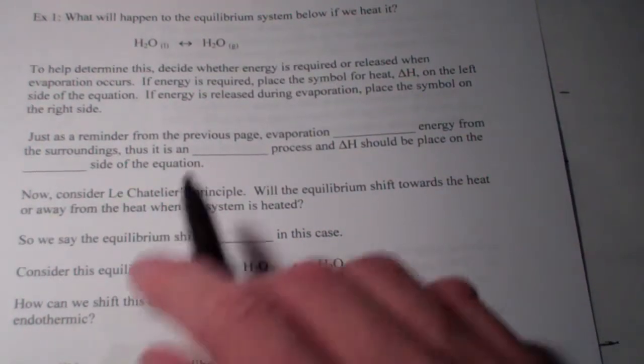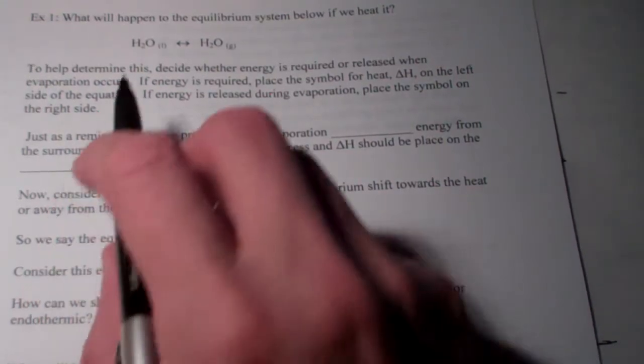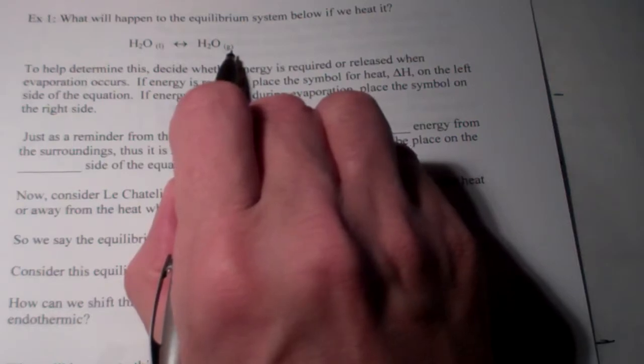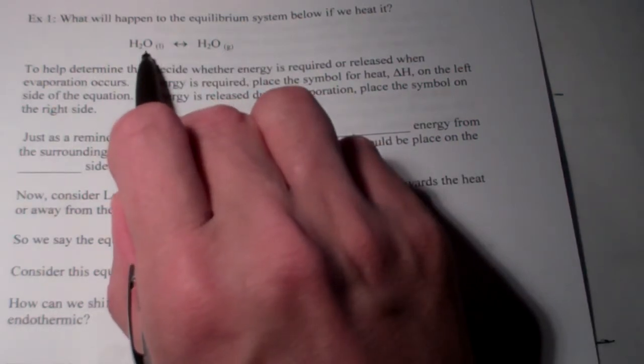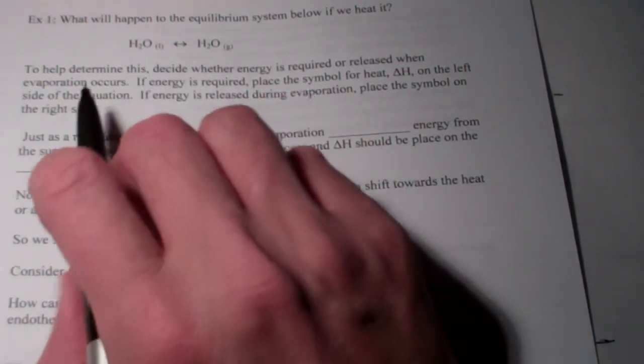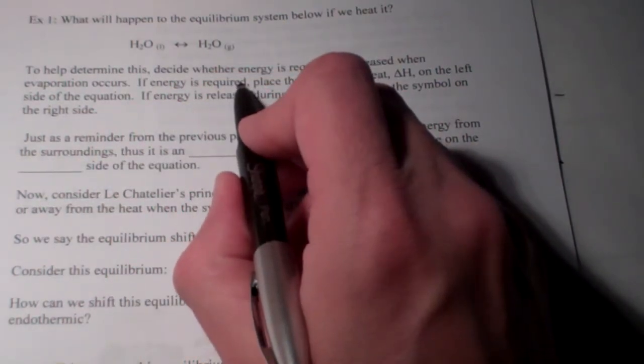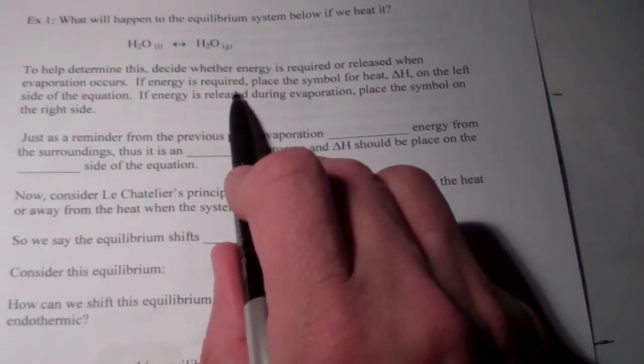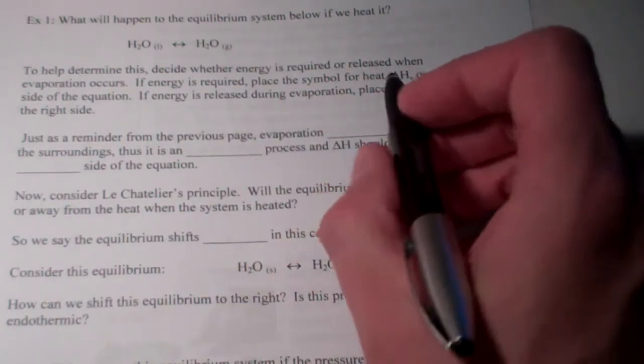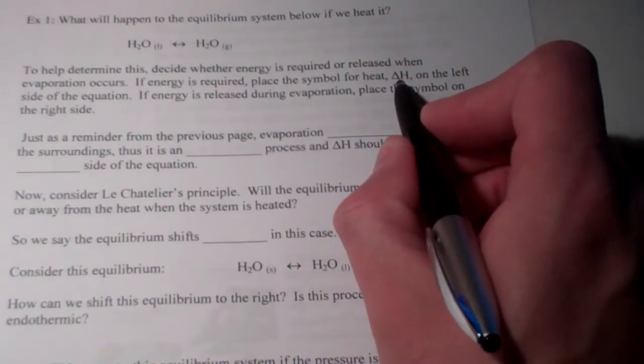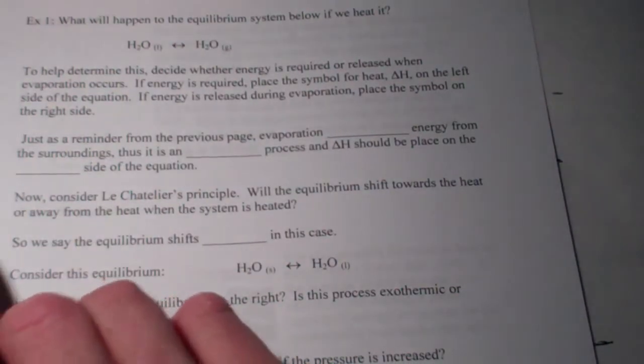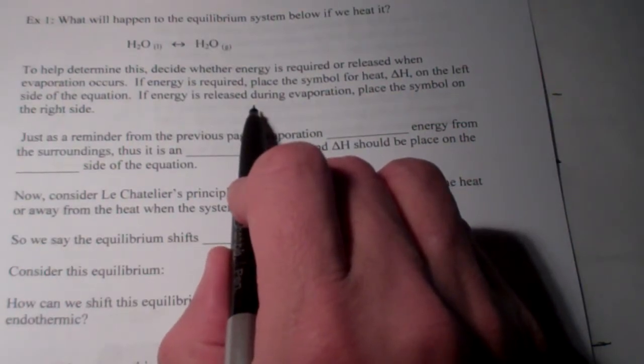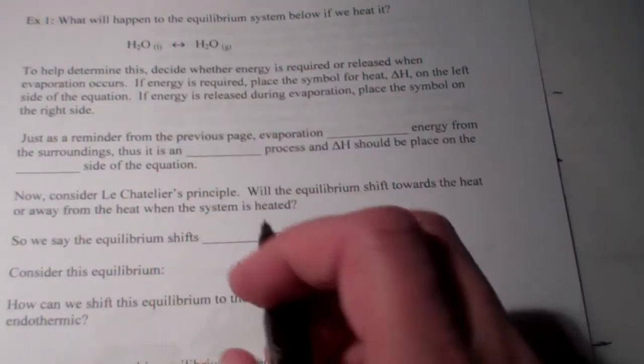If we heat this system, what do you think will happen? Will the system shift to the right and produce more water vapor? Or will it shift to the left and produce more liquid water? To help us determine this, let's decide whether energy is required or released when evaporation occurs. If energy is required, we will place the symbol for heat, delta H, on the left-hand side of the equation. If energy is released during evaporation, we will place the symbol delta H on the right-hand side of the equation.